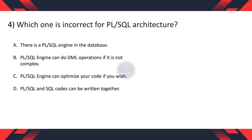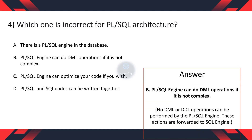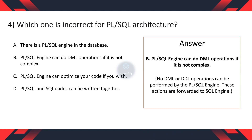Question 4. Which one is incorrect for PL/SQL architecture? A. There is a PL/SQL engine in the database. B. PL/SQL engine can do DML operations if it is not complex. C. PL/SQL engine can optimize your code if you wish. D. PL/SQL and SQL codes can be run together. And the correct option is B, because the PL/SQL engine can't perform DML or DDL operations. These actions are forwarded to the SQL engine.